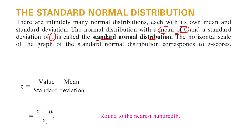If you have population data, you use Greek letters mu and sigma. When working with a sample, you use x-bar and s. Make sure that if the question doesn't mention anything about rounding, you round to the nearest hundredth.